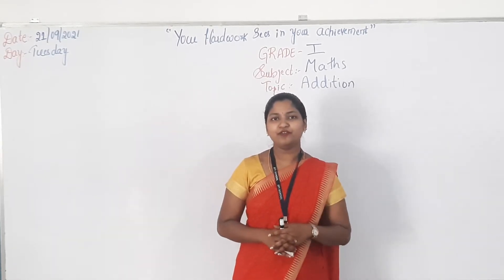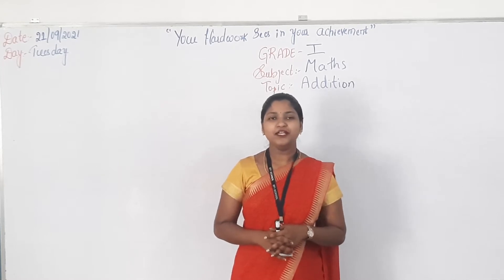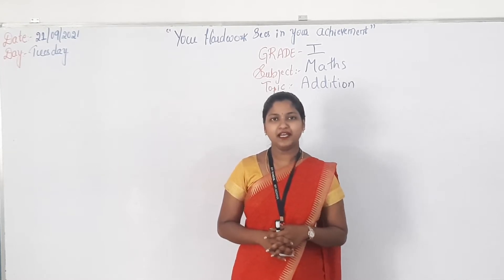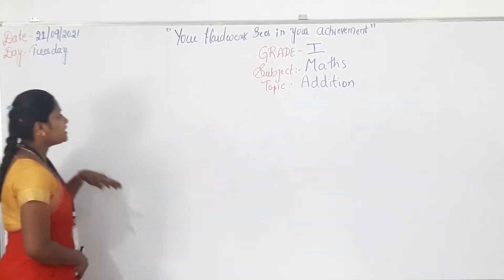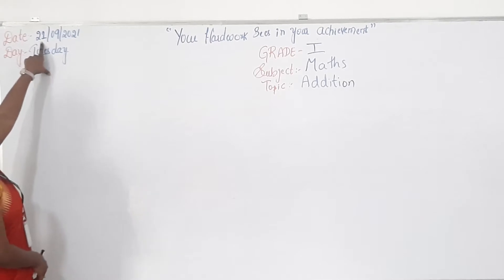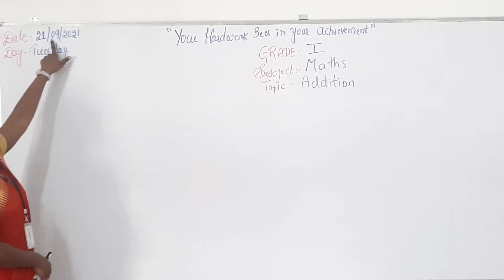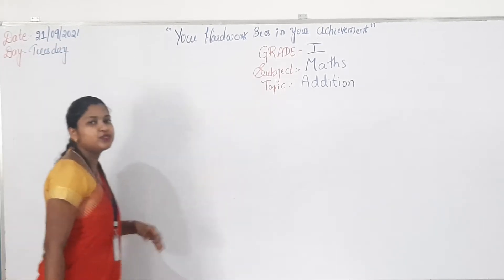So before that, what we have to do? We have to see today's date and day. So what is today's date? Today's date is 21st September 2021 and the day is Tuesday.